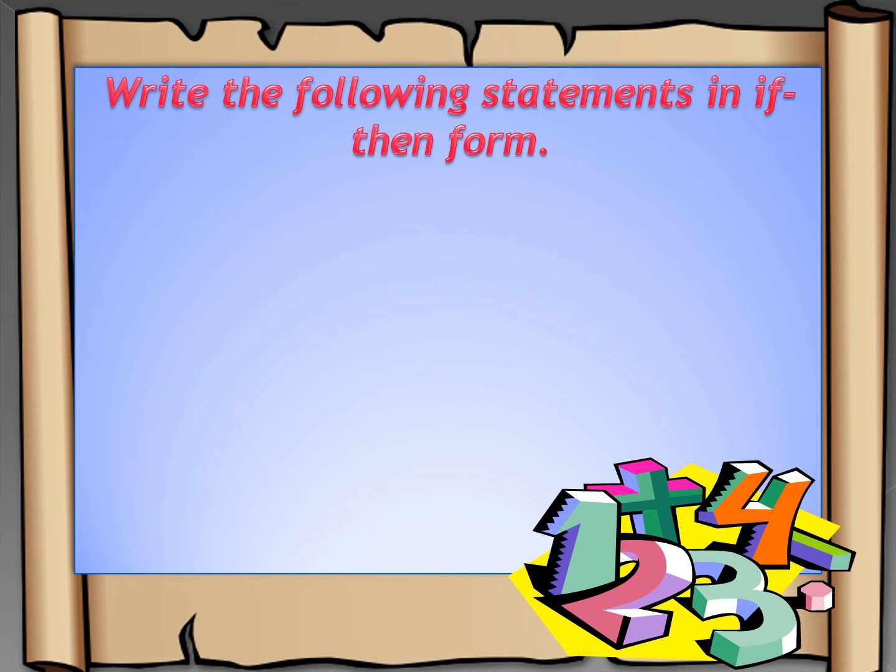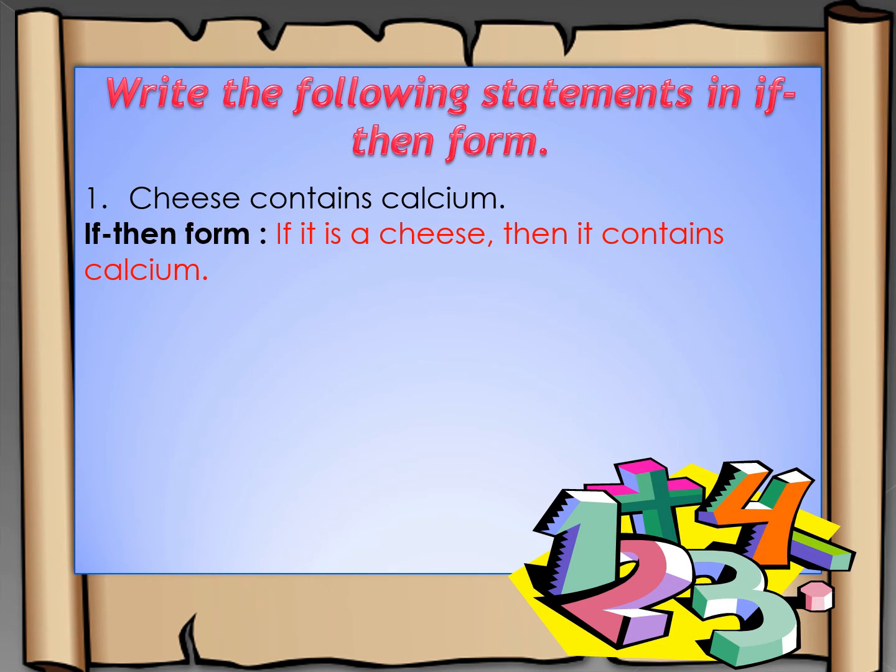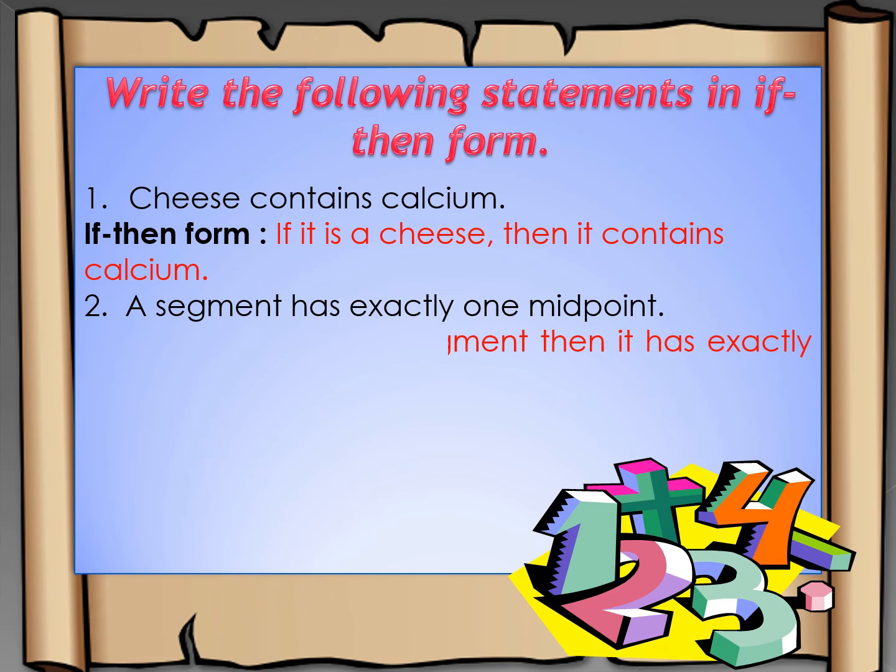We have already learned how to identify the hypothesis and the conclusion. Now, let us write the following statements in if-then form. Cheese contains calcium. If it is a cheese, then it contains calcium. Number two: A segment has exactly one midpoint. If we write this in if-then form, it would be: If it is a segment, then it has exactly one midpoint.